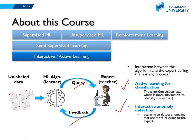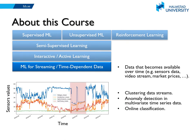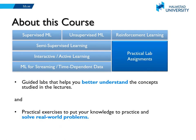You will also study interactive anomaly detection methods that learn to detect anomalies more relevant to the expert. Additionally, you will learn how to use machine learning when data comes as a stream and becomes available gradually over time — examples include video streams and sensor data. You will study methods to cluster data streams and do anomaly detection in time series data. As you progress through the course, you will do practical labs to apply your knowledge to solve real-world problems.